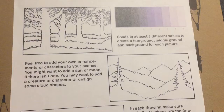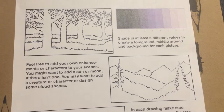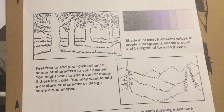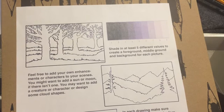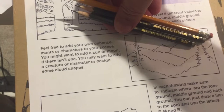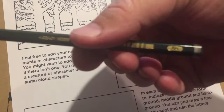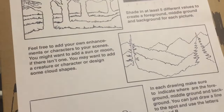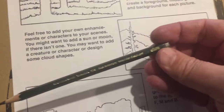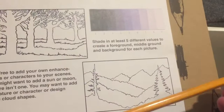Continuing on our worksheet on atmospheric perspective — you have three drawings to complete on your own. For this, I would recommend using three pencils: a 6B for your real darks, a 4B as the recommended middle choice if you only pick one, and a 2B as your hardest graphite for your lightest effect.